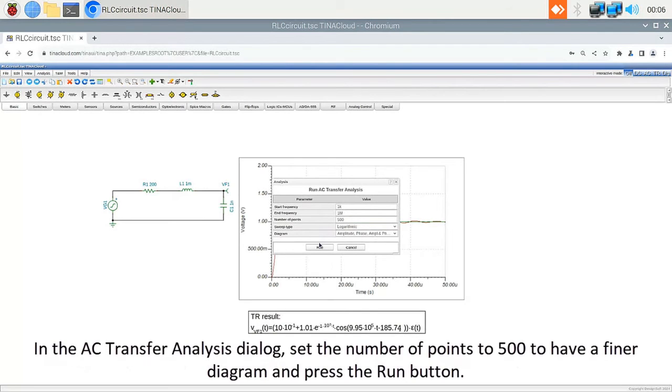In the AC Analysis dialog, set the number of points to 500 to have a finer diagram, and press the Run button.